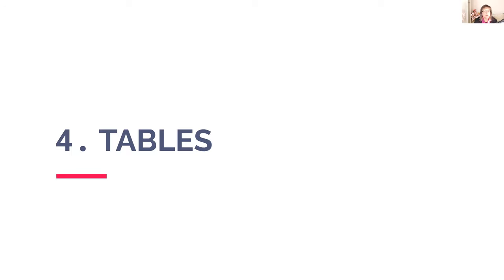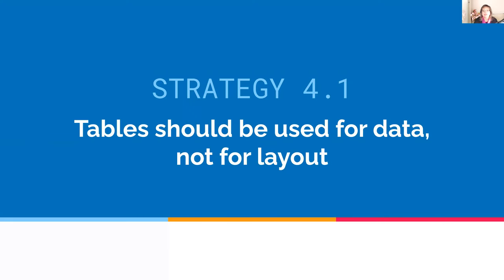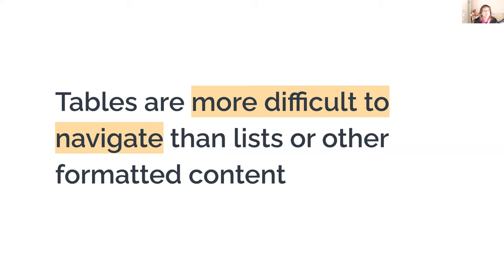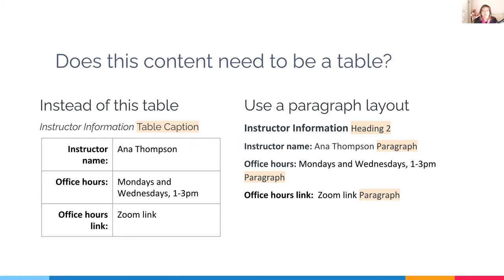Now we're going to talk about tables. Tables should be used for data and not for layout. The reason is that tables are more difficult to navigate than lists or other formatted content for people with disabilities. For example, does instructor information in a table on a syllabus really need to be a table? It's a bit harder to navigate and there are no headers because it's a layout table. Instead, why not create a paragraph layout with a heading? And if you're using multiple headings, remember to use them in the correct order.